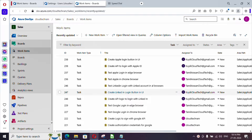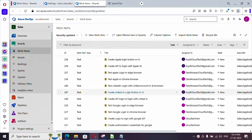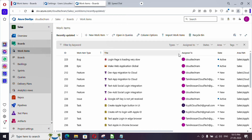In our earlier video we created this project and we created teams as well. Let me explain the overall structure: 'Sales Application' is our project, and under that we have two major areas — Cloud Solution and Application Solution. Cloud Solution will be working on cloud migration, and Application Solution team will be working on social media integration and login. Under each area we have a dev and testing team.